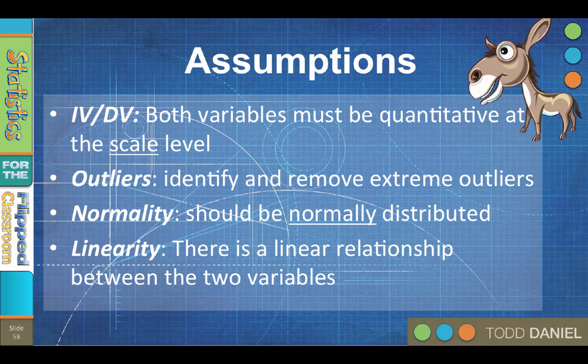There should be a linear relationship between the two variables. You can confirm this by using a scatter plot. This is not truly an assumption, because the whole point of Pearson's test is to determine if there is a linear relationship between the two variables. But when you look at the scatter plot, you will see if it is not linear — for example, if it curves or is cone-shaped. If so, you would use the non-parametric Spearman's rank order correlation, or you could transform the data.